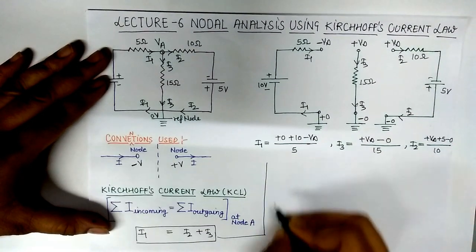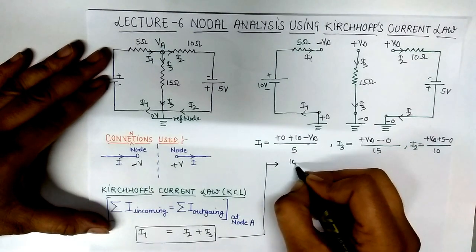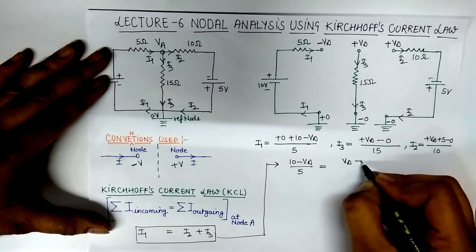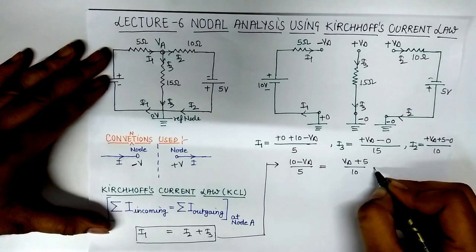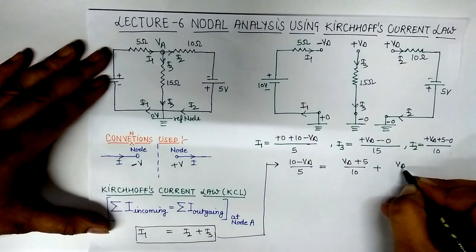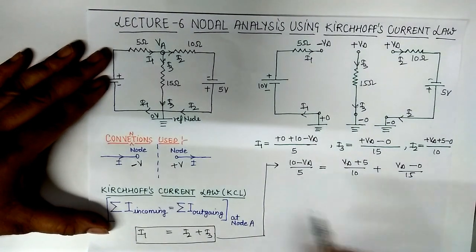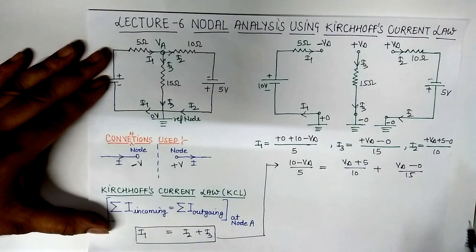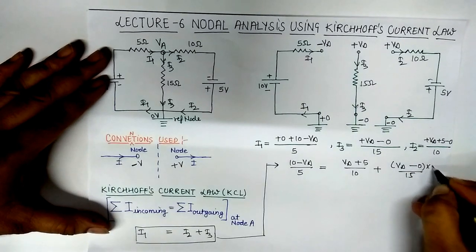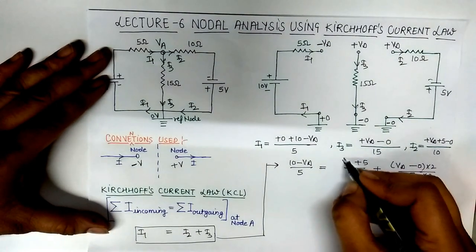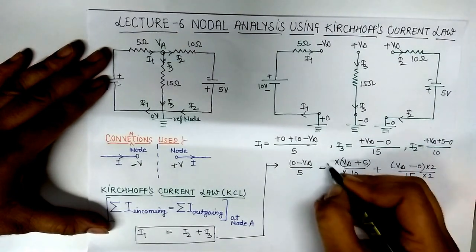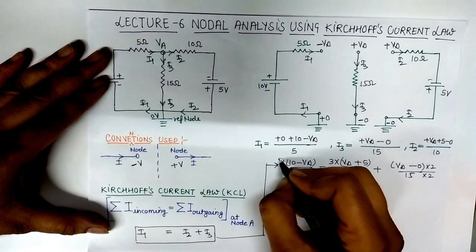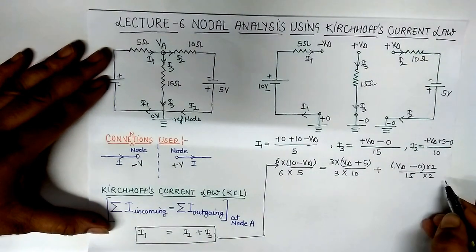So we solve here: I1 is (10 minus VA) upon 5 equals VA upon 10 plus VA minus 0 upon 15. So we solve this equation. To solve this equation we make denominators equal. So we multiply and divide by 2 here, I2, and divide by 3, and here multiply and divide by 6. So here all denominators are equal.